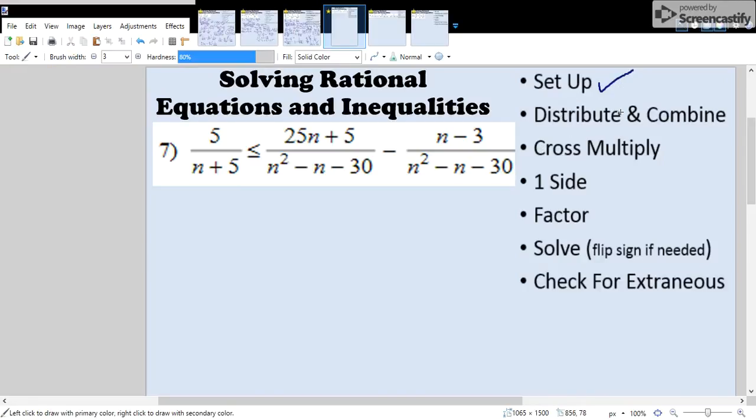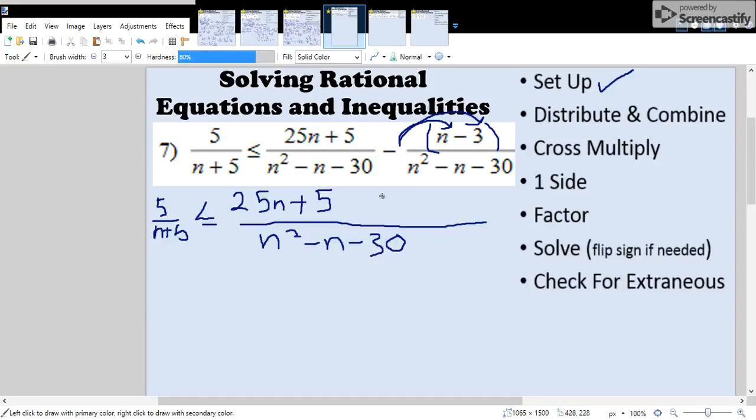Step 2, we're going to distribute and combine like terms. We do have a minus sign, so we're going to distribute it into all the terms on the second fraction. When you distribute the minus sign, we have negative n and plus 3. So we're going to have minus n plus 3 up here.